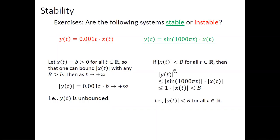For the second example, the output is a sinusoidal function. Although it has a large coefficient of 1000, the modulus of sine never exceeds one. Therefore, if we assume |x(t)| < B, then |y(t)| ≤ 1 · |x(t)| < B. So y(t) is bounded. Bounded input leads to bounded output — this is a stable system.